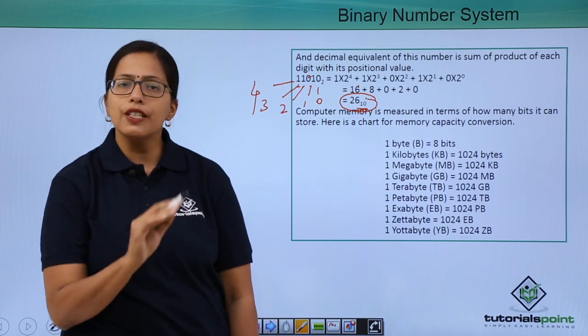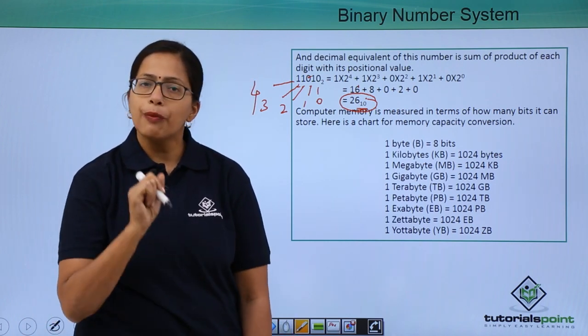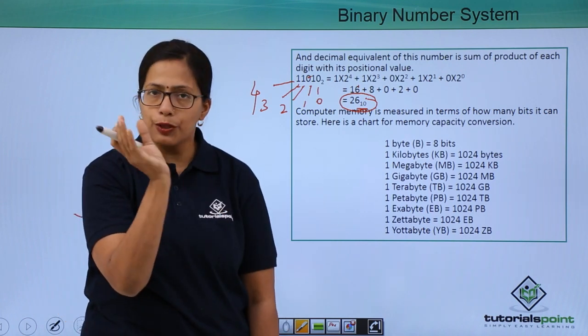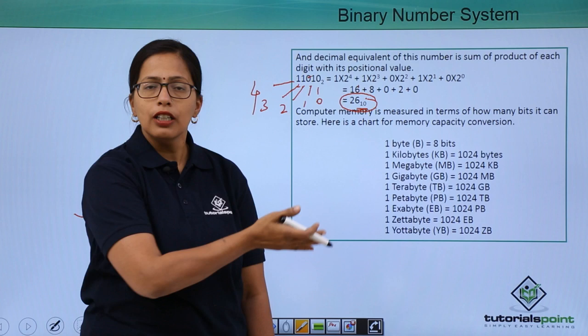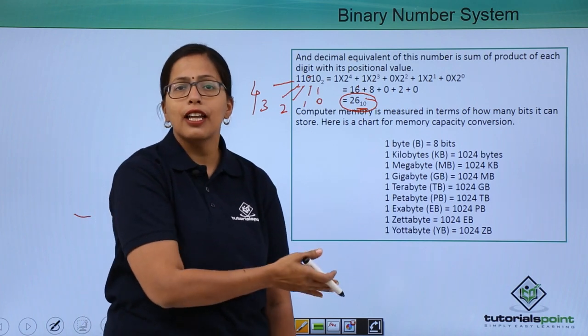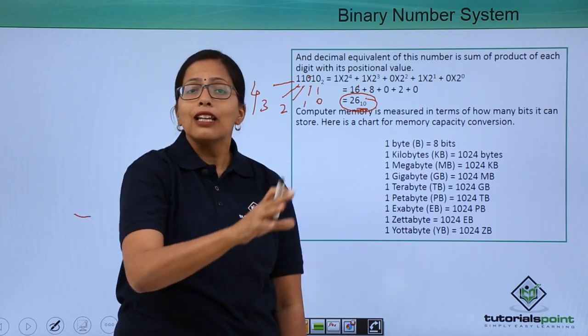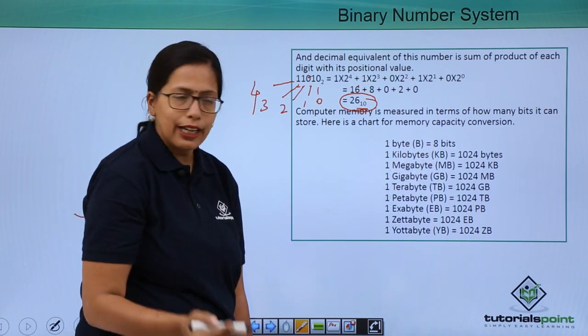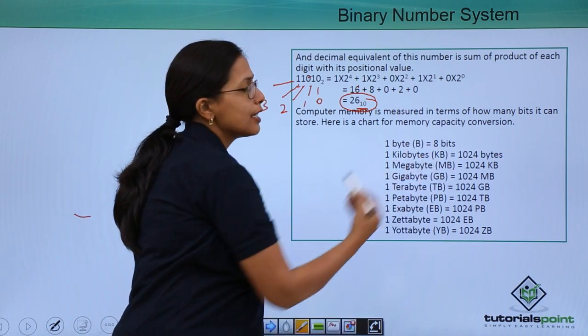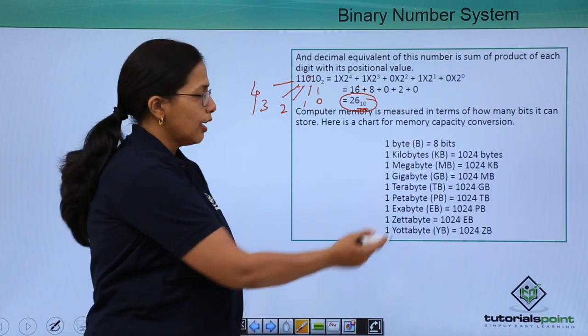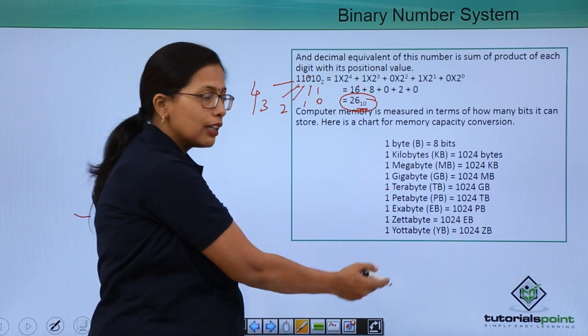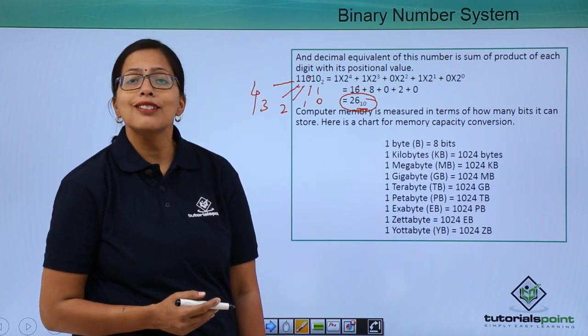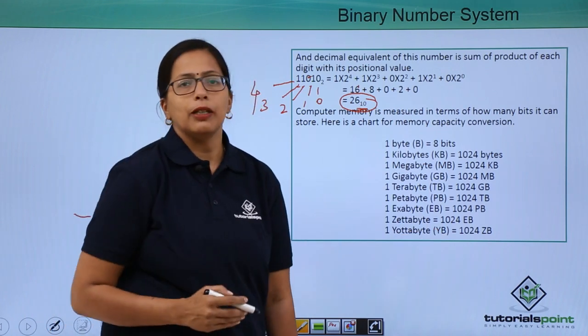Computer memory is always calculated in terms of bits or bytes. However, bit or byte is a very small quantity. So, we have a chart that depicts how we can calculate computer memory. 1 byte is equal to 8 bits. 1 kilobyte is equal to 1024 bytes. And similarly, we will proceed till we get to 1 yottabyte which is equal to 1024 zettabytes.